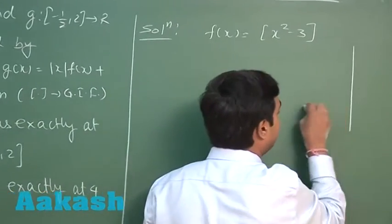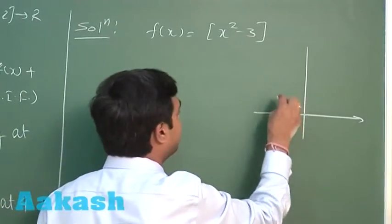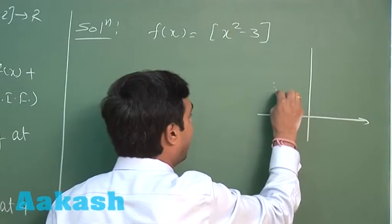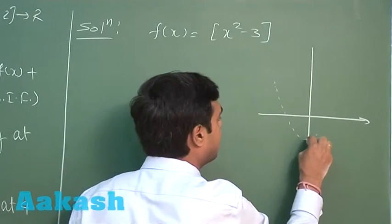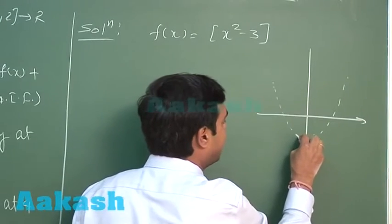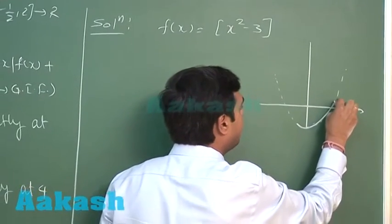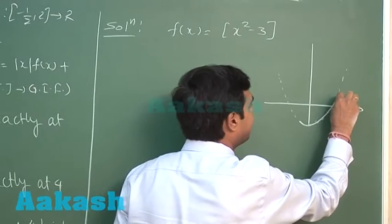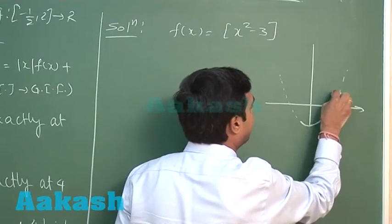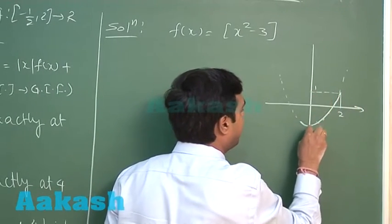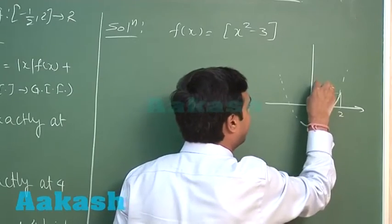x is lying in the interval minus half to 2. If I try to trace the curve y equals x squared minus 3, the parabolic part I can trace it in this fashion. For the interval minus half to 2, we can see it goes like this. The maximum value is obtained as 1 while the minimum is obtained as minus 3.